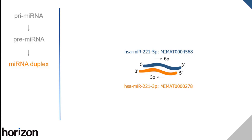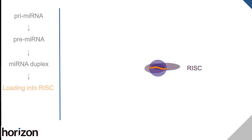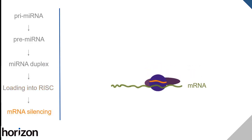Either strand can be integrated into the RNA-induced silencing complex, RISC, as the guide strand, which targets RISC to an mRNA. Interaction between RISC and the target mRNA induces translational attenuation or mRNA degradation.